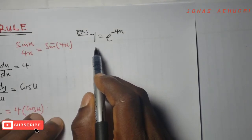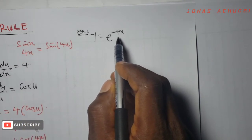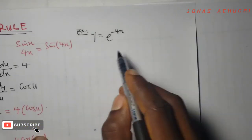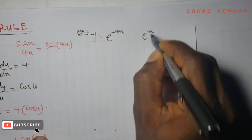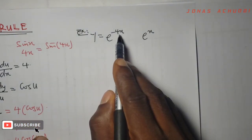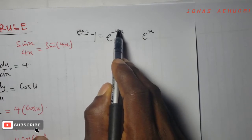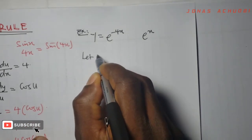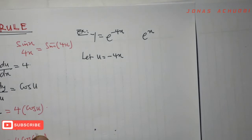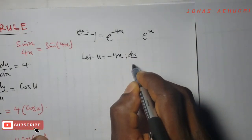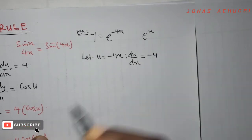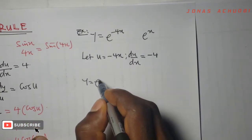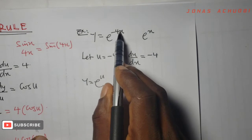Our next example: y equals exponential negative 4x. Do we also see a function of a function here? What we know is e^x, not e^(-4x). So minus 4x is a function being carried inside the exponential function. I will say let u equal minus 4x, so that differentiating u with respect to x gives minus 4. The function now becomes y equal to e^u, because we called minus 4x as u.